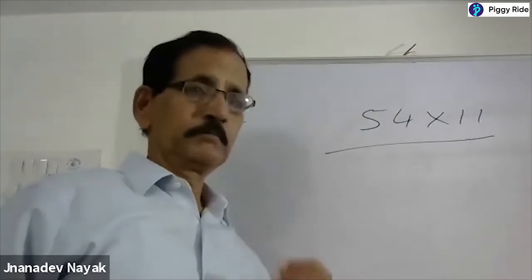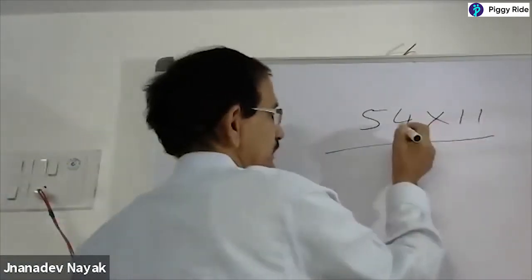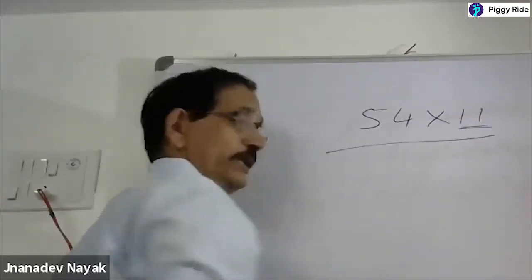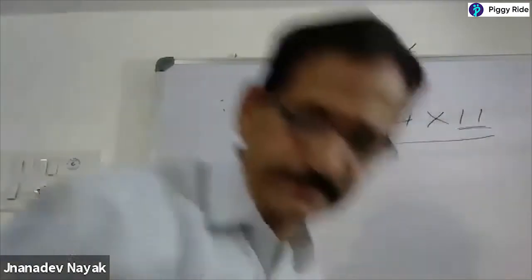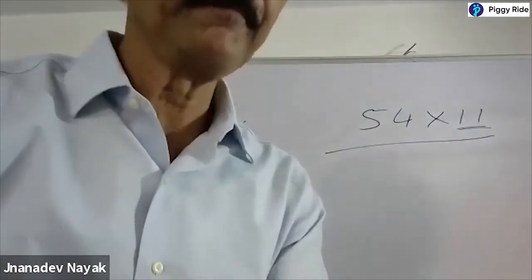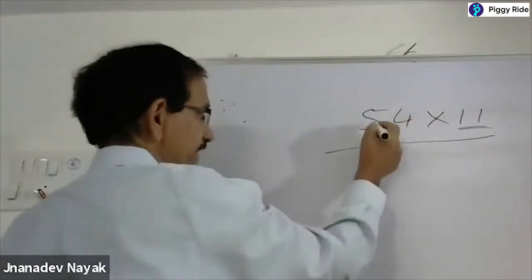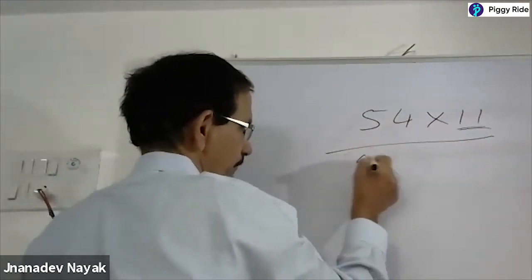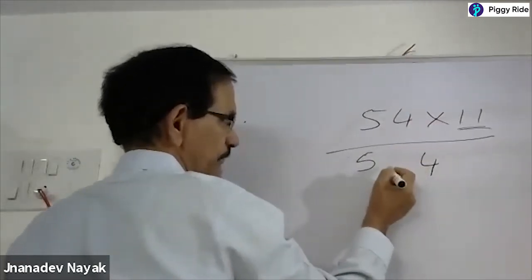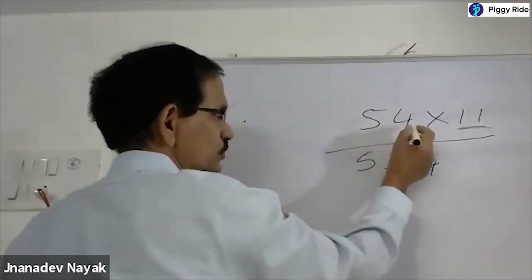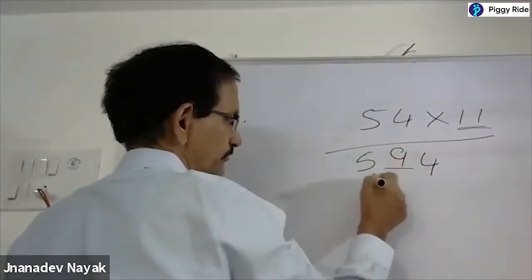This is called multiplying any number by a series of ones. Here there may be any number, and here I should have only ones — two ones, three ones, four ones — that is called a series of ones. So here, 54 into 11. First you write this 5 here. Leave some place and write this 4. In the middle, just add these two numbers: 5 plus 4 equals 9. So the answer is 594. You need not multiply the long way.